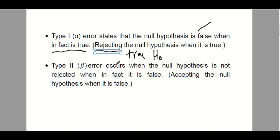The type 2 error, on the other hand, is when the null hypothesis is not rejected — meaning you accepted the null hypothesis, but in fact it is false. That's an error because why would you accept a false null hypothesis? So the type 1 error is rejecting the true null hypothesis, and the type 2 error is accepting the false null hypothesis. Both of these are errors.